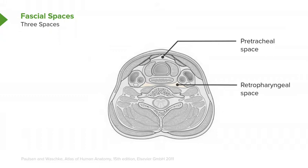A second space is shown right in through here. This is referred to as the retropharyngeal space, and it lies between the visceral compartment in its sheath and the vertebral compartment in its deep fascial layer.